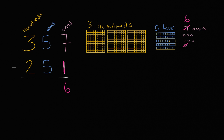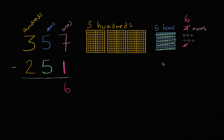Now let's go to the tens place. We start with five tens, but we're going to subtract five tens — one ten, two tens, three tens, four tens, five tens. We've taken all of the tens away, so now we have zero tens.